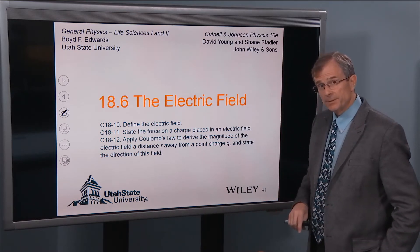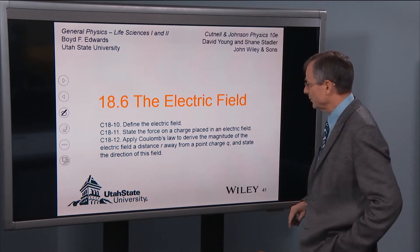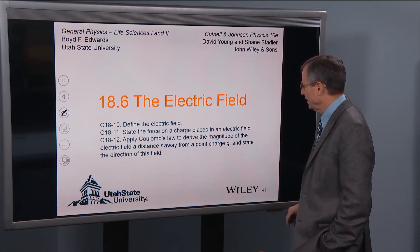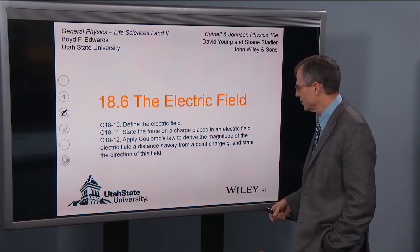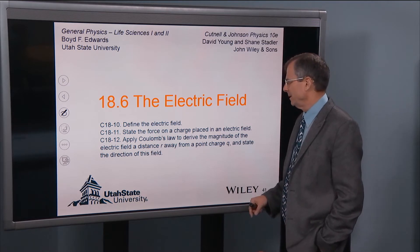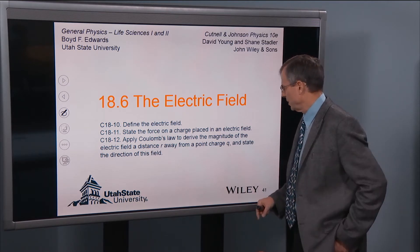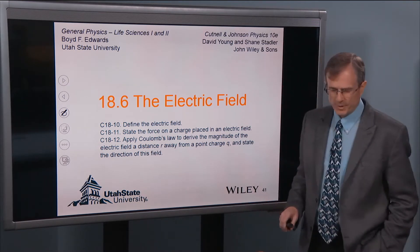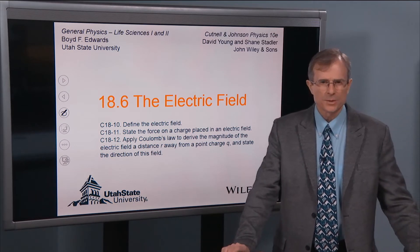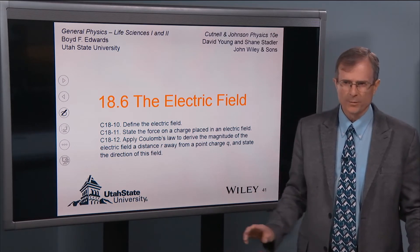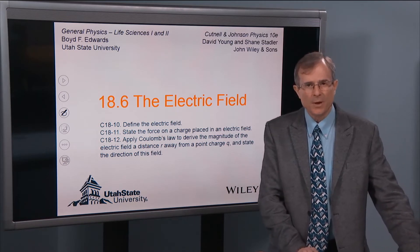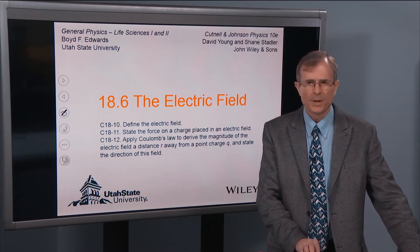We'll define the electric field — a very useful concept. Then we'll state the force on a charge placed in an electric field, and apply Coulomb's law to derive the field at a distance r away from a point charge q, which will look very similar to the gravitational field around the Earth.